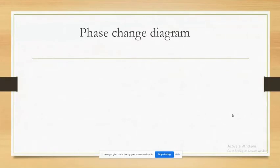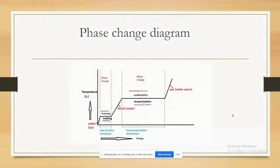Myself Krishna Singh. The phase change diagram depicts the behavior of H₂O at different temperatures. At 0°C, ice and water are in equilibrium with freezing and melting taking place simultaneously.